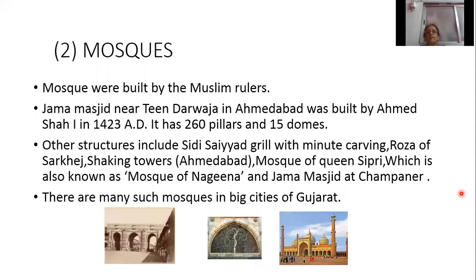During the medieval period — the period of the Muslim kingdom — many mosques were built in Gujarat. The Jama Masjid is situated at Teen Darwaza in Ahmedabad. It was built by Sultan Ahmed Shah I in 1423. It has 260 pillars and 15 domes.